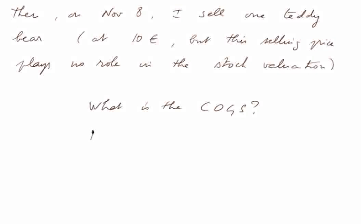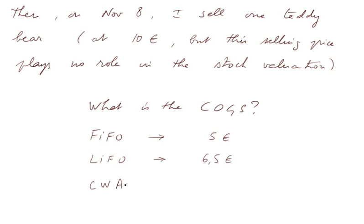If I use the FIFO method — first in, first out — it's the first teddy bear that entered my stock which is sold first. So using the FIFO method, the cost was 5 euros. The LIFO method says we first sell the last in; in that case, the last teddy bear in cost 6.5 euros. And the CWA continuous weighted average method computes an ongoing average price of what I have in stocks; in that case, the teddy bear I sold was at the average price of 5.75 euros.